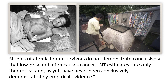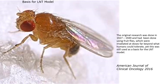The linear no-threshold model estimates only a theory that exposure to radiation can cause cancer, and that all exposures are dangerous. The original research that came up with the linear no-threshold dose model was done between 1927 and 1949, and had been done using fruit flies which were irradiated at doses far beyond what humans could tolerate. Yet this was still used as a basis for the linear no-threshold theory, making its validity very suspect.